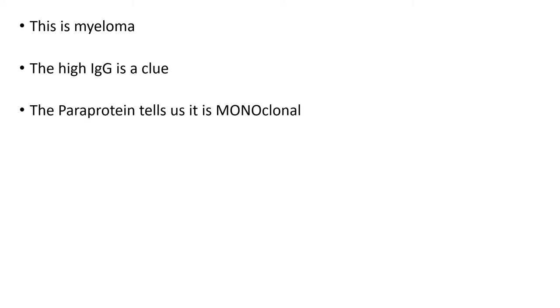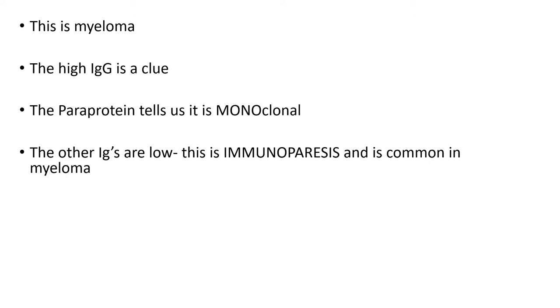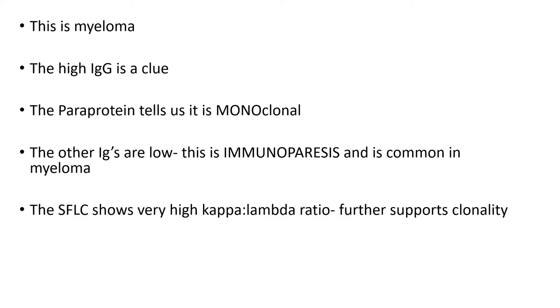So this is myeloma. The clues are your high IgG, your paraprotein that tells you it's monoclonal, and the fact that the other immunoglobulins are low. This is called immunoparesis and is common in myeloma — it's one of the explanations as to why patients are immunocompromised, because the immunoglobulin they do have is usually clonal and therefore non-functional, and the other immunoglobulins are very low. The serum free light chain showing a very high kappa-lambda ratio is further evidence of clonality.